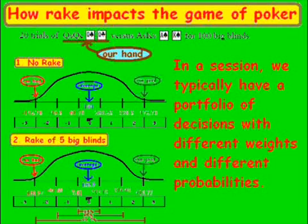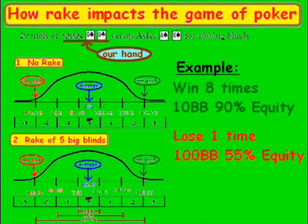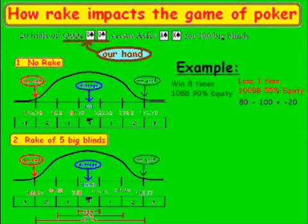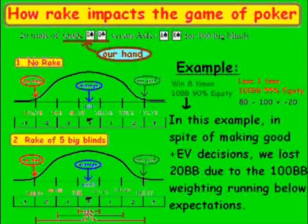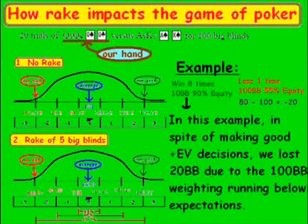An example of weighting: we win 8 times for 10 big blinds with 90% equity, and we lose 1 time for 100 big blinds with 55% equity. We won 80 big blinds total across the 8 wins, but the one loss cost us 100 big blinds — leaving us net negative 20 big blinds, even though we made good decisions throughout. That's an extreme example of how weighting and variance can cause us to lose money despite having positive equity.